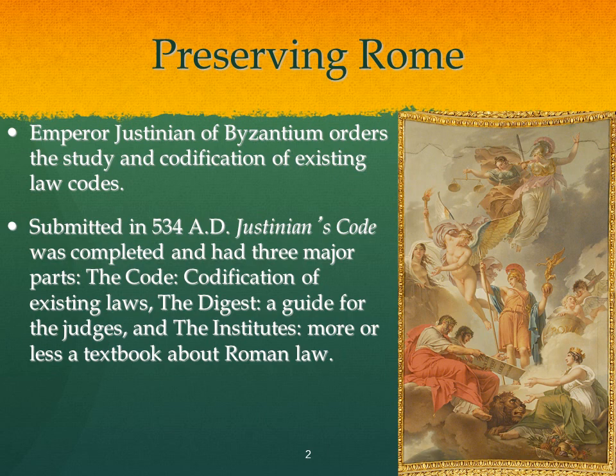As Rome fell, there was a big concern among those still part of the empire about how to preserve Rome. Specifically, we're talking about the Byzantine Empire. There were some great emperors who got the Byzantine Empire moving. However, it really is Justinian who is the stand-alone figure worth mentioning in about the first few centuries. Justinian was responsible for the Hagia Sophia Church, the attempts to preserve the empire, and to reconquer the old territory. But when it comes to the legal side of things, his biggest contribution is Justinian's Code.